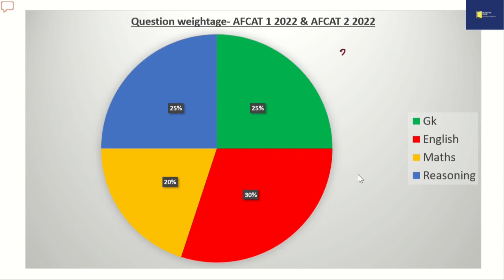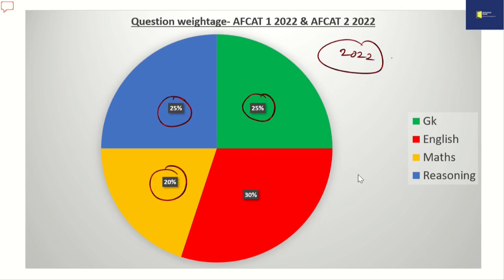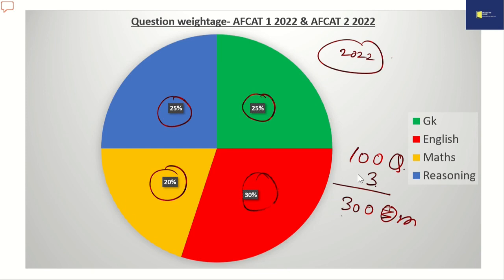This new pattern was introduced in 2022 itself. Here we are getting 25 questions from GK, 25 questions from reasoning, 20 questions from maths, and 30 questions from English. That means 100 questions giving 3 marks each, so 300 marks in total.